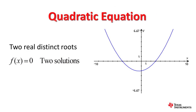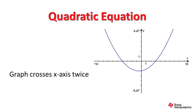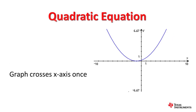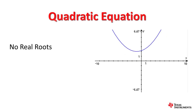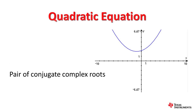A quadratic equation with real coefficients can have two real distinct roots when the discriminant is positive, so the graph crosses the x-axis twice. Another possibility is one real repeated root where the graph touches the x-axis and the discriminant is zero. The third case is when the discriminant is negative — the roots consist of one pair of conjugate complex roots.